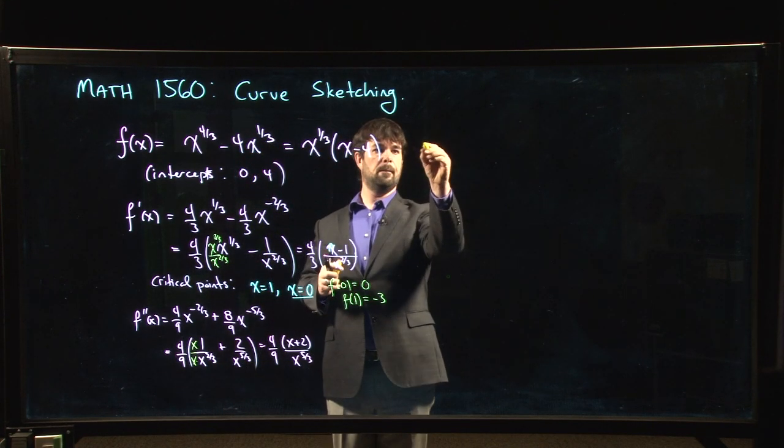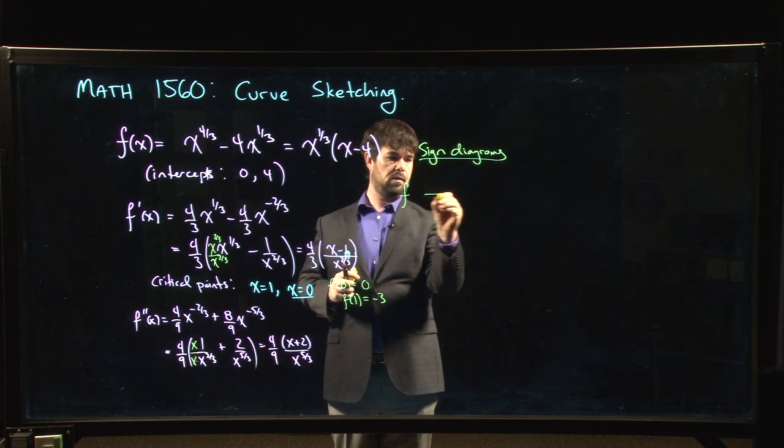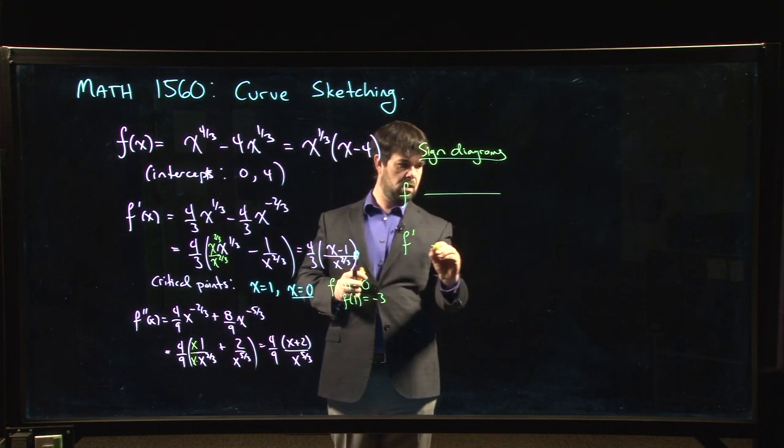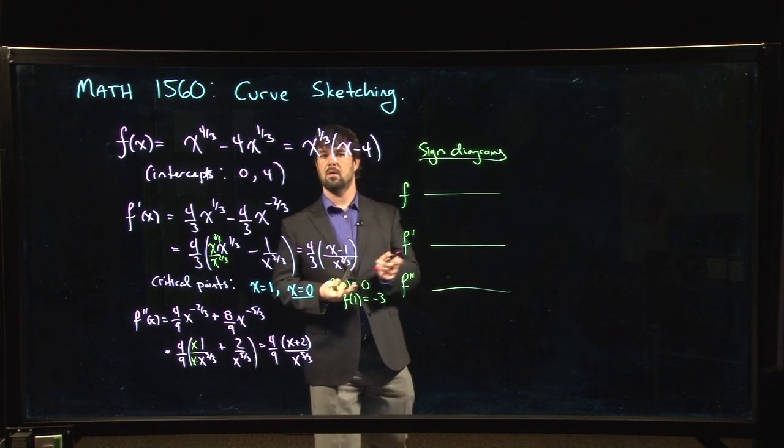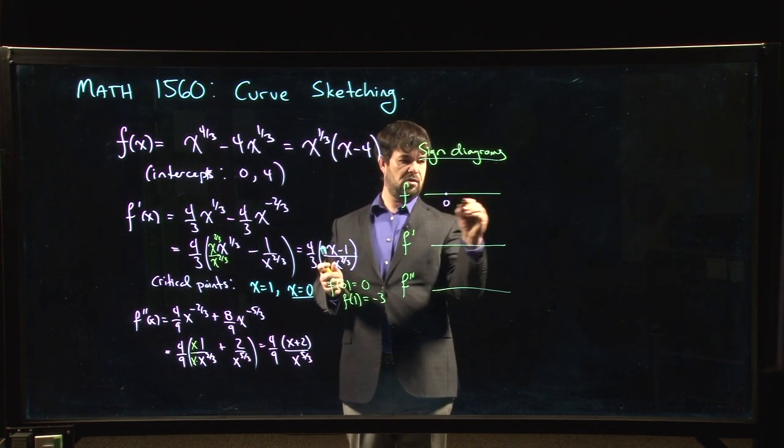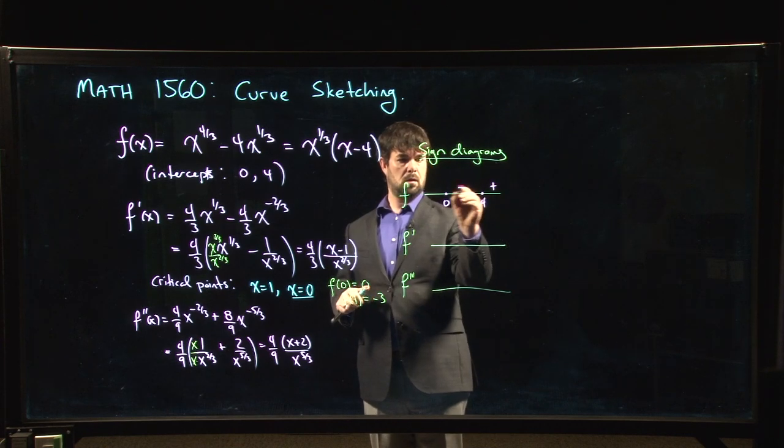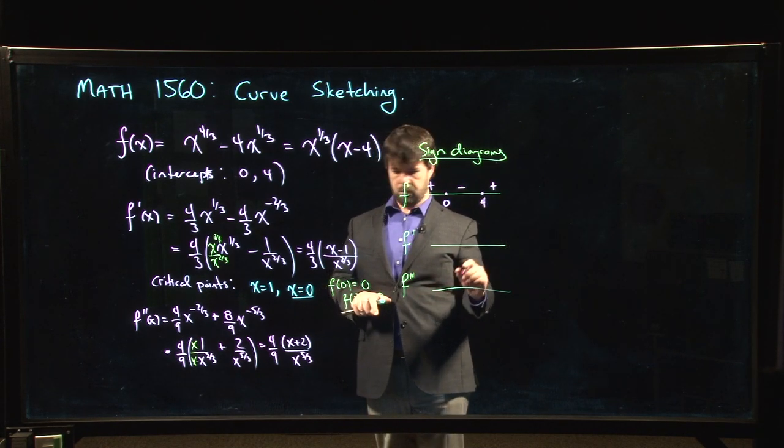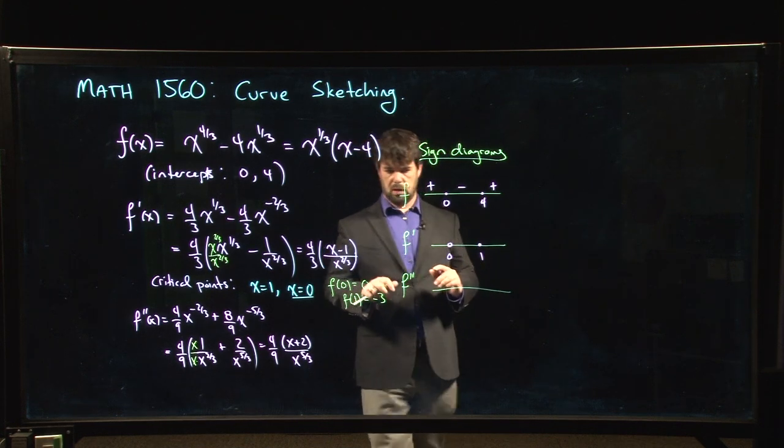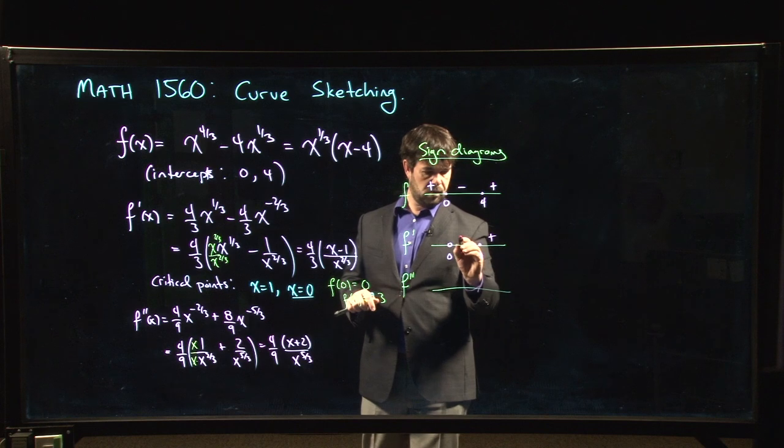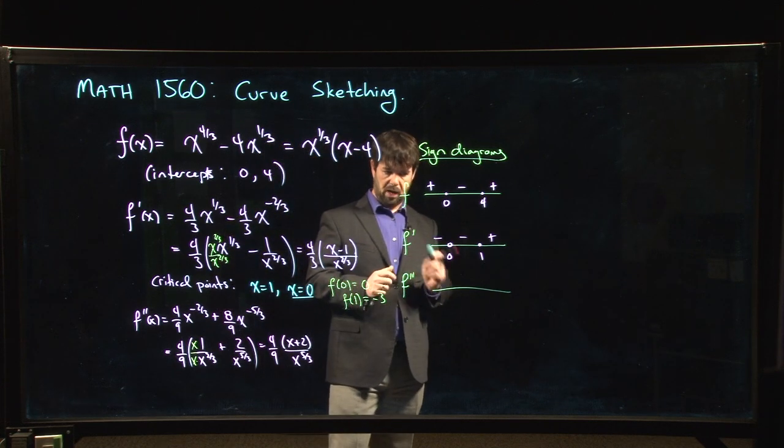Okay, so sign diagrams, we'll do one for F, one for F prime, one for F double prime. So we've got intercepts at 0 and 4, and signs go like that. For F prime, we've got critical numbers at 0 and 1, and our signs go plus, minus, minus. We don't get a sign change at 0, because that 2 in the 2 thirds gives you an even power, make sure it stays positive.